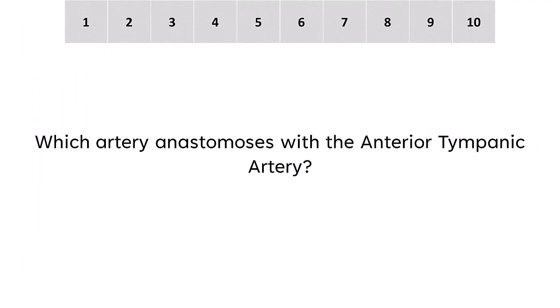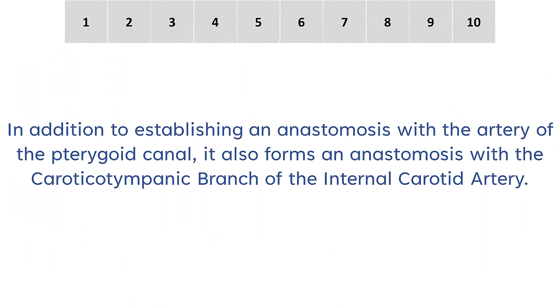Which arteries anastomose with the anterior tympanic artery? In addition to establishing an anastomosis with the artery of the pterygoid canal, it also forms an anastomosis with the carotico-tympanic branch of the internal carotid artery.